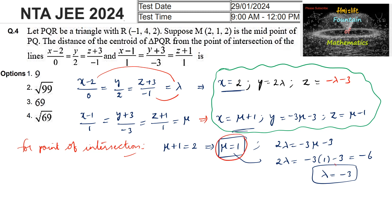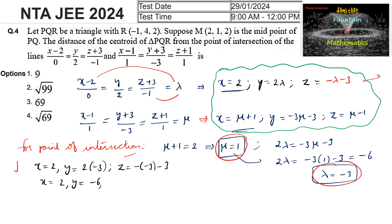With μ = 1 and λ = −3, substituting into either line equation gives the point of intersection: x = 2, y = 2·(−3) = −6, and z = −(−3) − 3 = 0. So the point of intersection is (2, −6, 0).